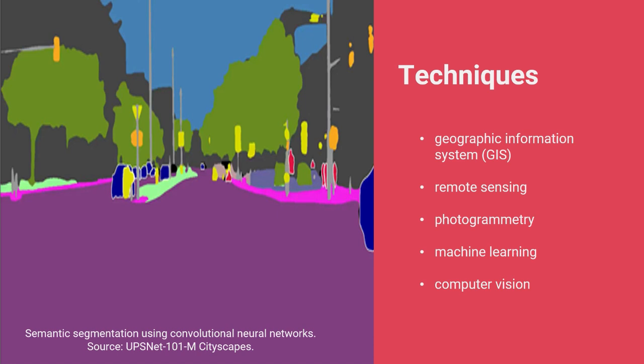Here in IEG we have experimented with different techniques for geospatial analysis: traditional GIS methodologies, remote sensing applications, photogrammetry for 3D applications, and machine learning and computer vision applications. The example on the slide illustrates semantic segmentation — a computer vision algorithm that segments an image into different elements. Vegetation is one class, roads is another, and so forth. We've been using this in the context of evaluations to extract information from images.